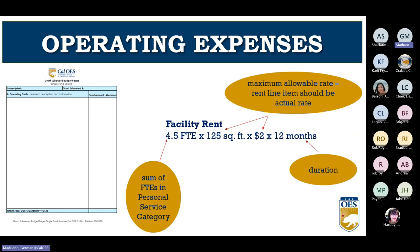Rent is a common operating expense. Add up the full-time equivalents from budget Category A — in this example, 4.5 FTEs. Multiply 4.5 FTEs by 125 square feet per FTE, as allowed in the subrecipient handbook. Then multiply by the amount you pay for rent per square foot — note that $2.00 is the maximum allowed; if your landlord charges $0.65 per square foot, use that rate. Finally, multiply by the duration — in this example, 12 months.